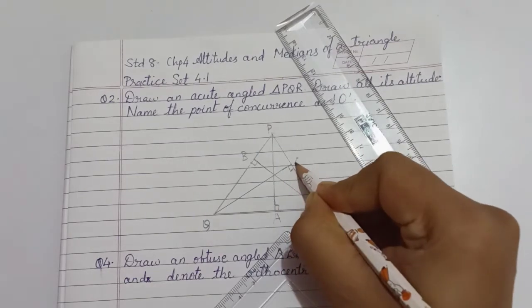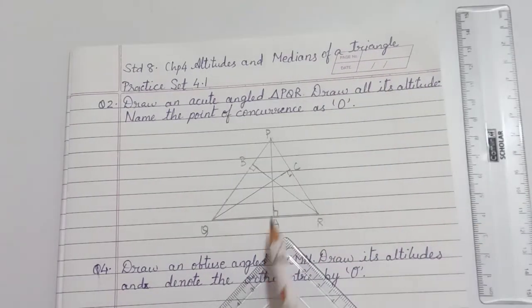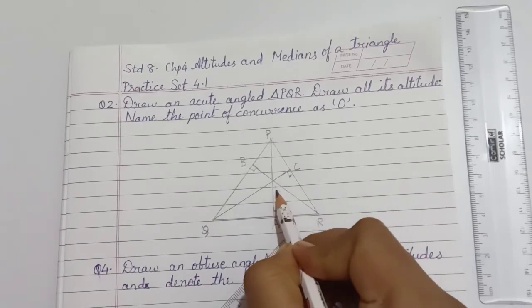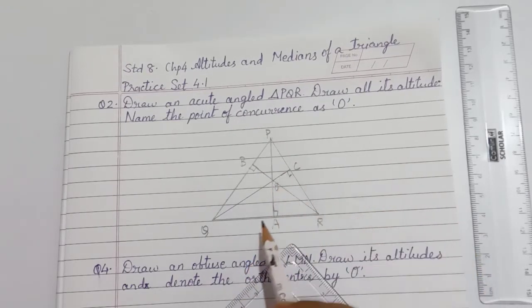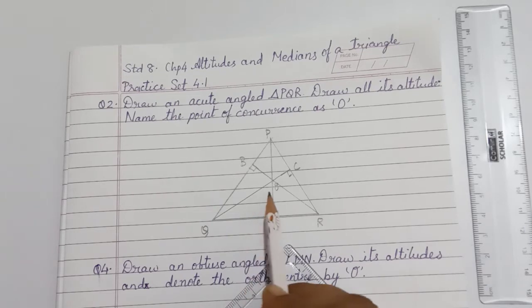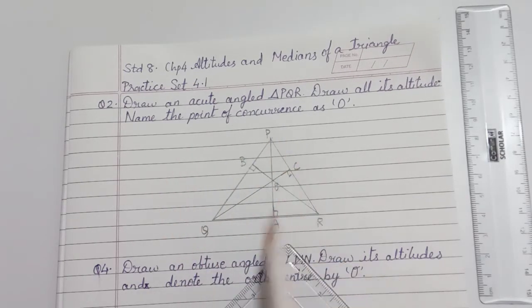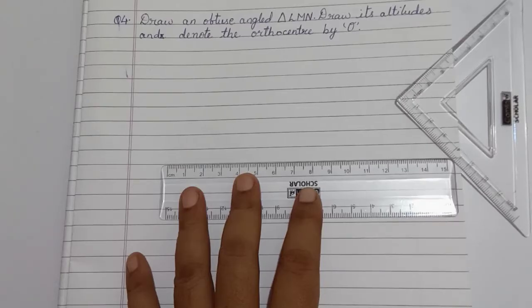Label the point as C. So we got the point of concurrence here, labeling it as O, the orthocenter. The orthocenter O lies in the interior of a triangle in an acute angle triangle.